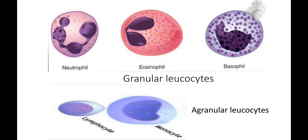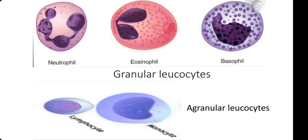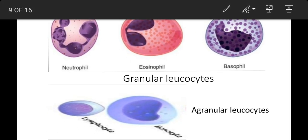Diagram mein hum dekh sakte hain ki granulocytes ke cytoplasm mein granules saaf dikhai de rahe hain aur agranular mein granules absent hain. Granulocytes sankhya mein lagbhag 70-75% hote hain. Inke cytoplasm mein granules paye jaate hain aur kendrak prayi 2-3 paraspar jude hue lobes mein divided aur asymmetrical hota hai, isliye inhe polymorphonuclear cells kehte hain. Ye bone marrow ki reticular cells se bante hain aur inke formation ko myelocytosis kehte hain.